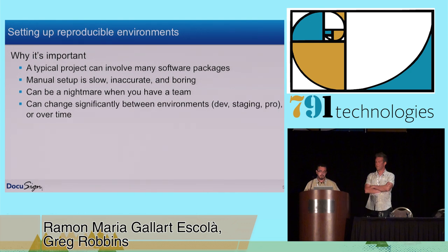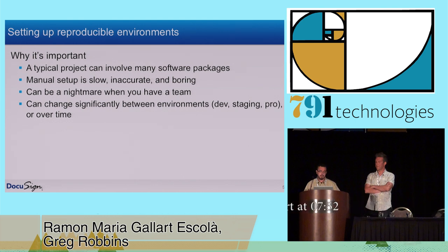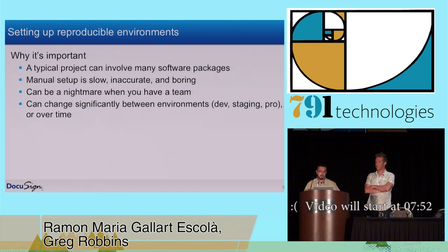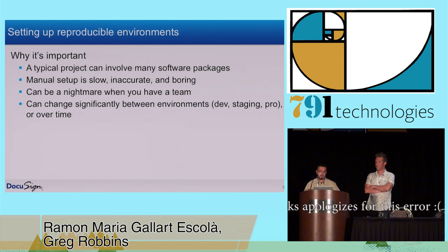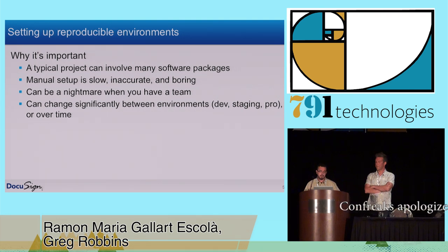Your environments can change from one realm to another. Like, development's not going to be the same as staging, and it's not going to be the same as production. Maybe in development I have some sort of debugger running, where I probably wouldn't have that in production. And these environments also change over time. Our applications are awesomely fast, but when they're not fast enough, maybe we need to introduce some sort of caching mechanism — a change that maybe happens later on in the software development lifecycle.